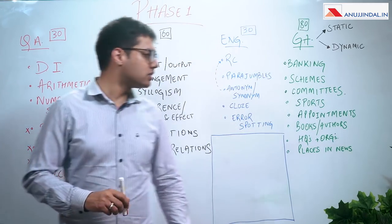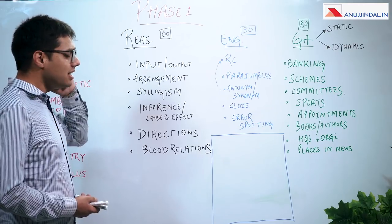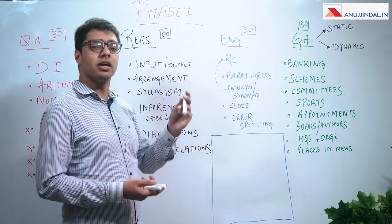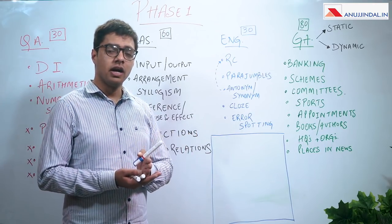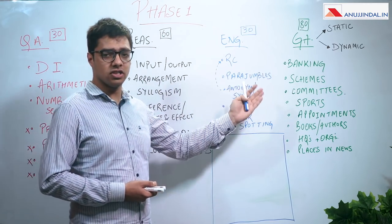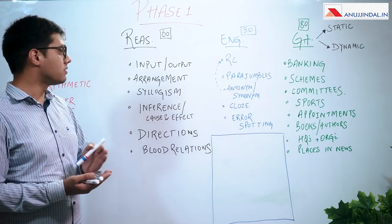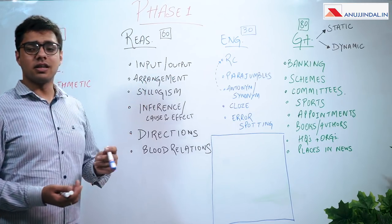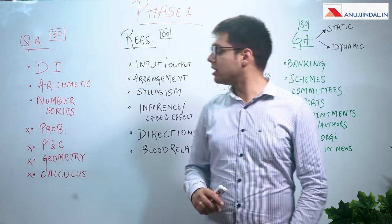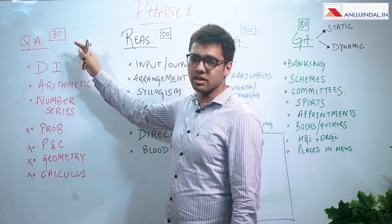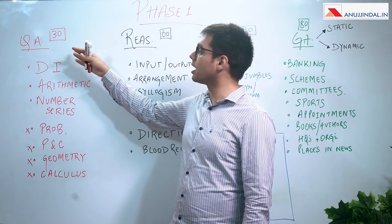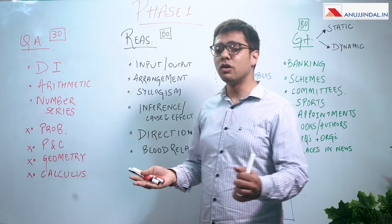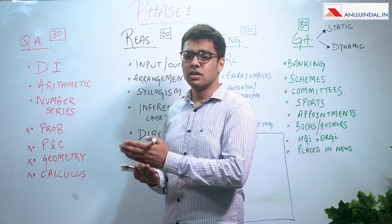Giving equal focus on all sections means you cannot and should not ignore either of the sections because there is a sectional cutoff. You need balanced performance across all sections to clear Phase 1. For example, people find quantitative aptitude very difficult, and they try to just get 12 or 13 marks to clear it. But what if one year that section becomes much easier and on average everyone is scoring 20 plus, while you're only scoring 13, 14 or 15 — putting you 5 marks behind successful candidates.